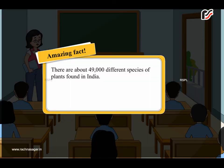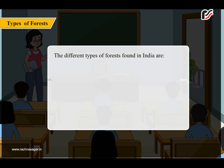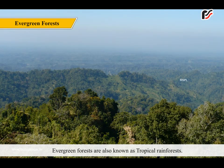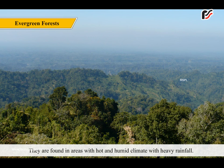Amazing Fact: There are about 49,000 different species of plants found in India. The different types of forests found in India are: 1. Evergreen forests, 2. Deciduous forests, 3. Thorny and scrub forests, 4. Mountain forests, and 5. Mangrove forests.